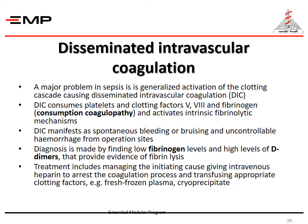Disseminated intravascular coagulation is a major problem in sepsis, as there is generalized activation of the clotting cascade causing DIC. DIC consumes platelets and clotting factors 5, 8, and fibrinogen — consumption coagulopathy — and activates intrinsic fibrinolytic mechanisms. DIC manifests as spontaneous bleeding or bruising and uncontrollable hemorrhage from operation sites. Diagnosis is made by finding low fibrinogen levels and high levels of D-dimers, providing evidence of fibrin lysis. Treatment includes managing the initiating cause, giving intravenous heparin to arrest the coagulation process, and transfusing appropriate clotting factors, for example fresh frozen plasma or cryoprecipitate.